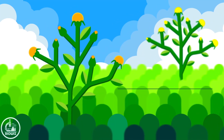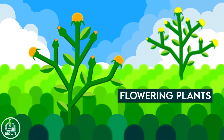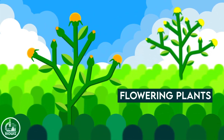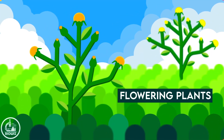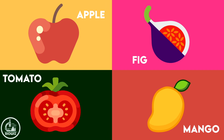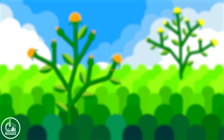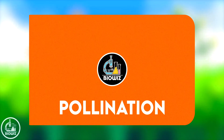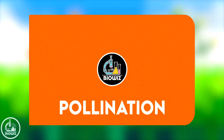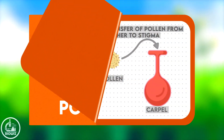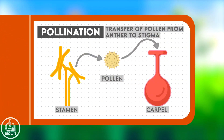Have you ever wondered how the colorful flowers transform into the sweet and delicious fruit that we eat? It all begins with a fascinating process called pollination. So let's take a deep dive into this topic and try to learn more about it.